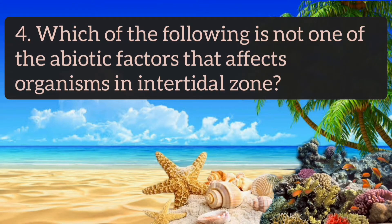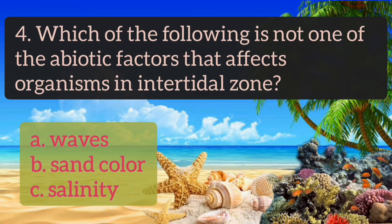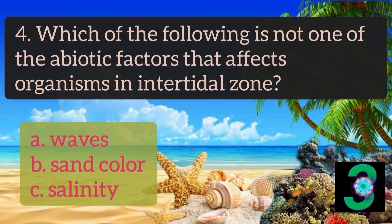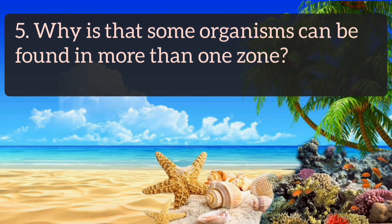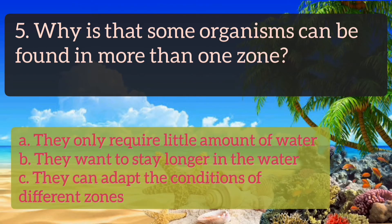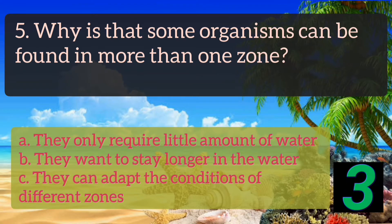Number 4: Which of the following is NOT one of the abiotic factors that affects organisms in the intertidal zone? A. Waves, B. Sand color, C. Salinity. It is letter B. Number 5: Why is it that some organisms can be found in more than one zone? A. They only require little amount of water, B. They want to stay longer in the water, C. They can adapt to the conditions of different zones. Letter C.